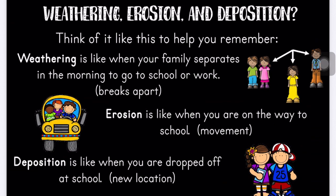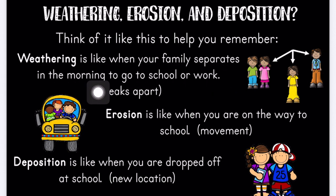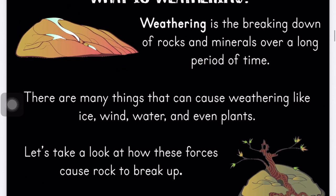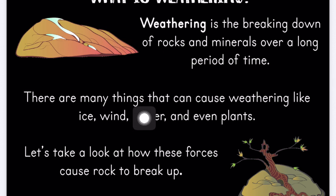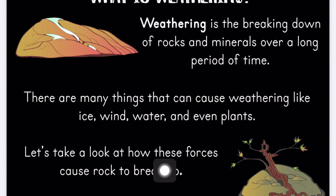I want to go back over this slide because I think it's the most helpful. Weathering is like when your family separates in the morning to go to school or work, because you're breaking apart — separating, going different ways. That's what weathering is like. Weathering is the breaking down of rocks and minerals over a long period of time. This takes a long time; it doesn't just happen very quickly. There are many things that can cause weathering like ice, wind, water, and even plants. Let's take a look at how these forces cause rocks to break up.